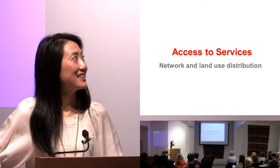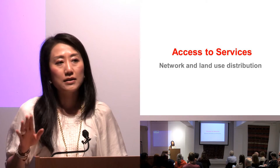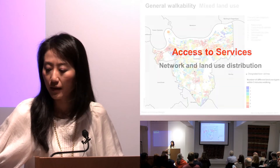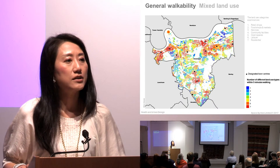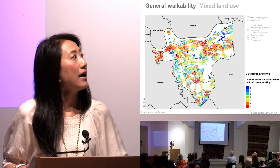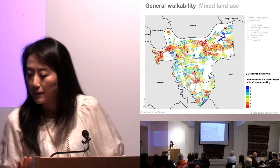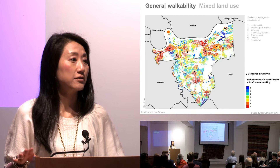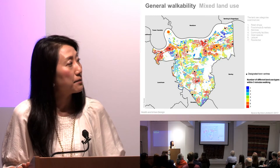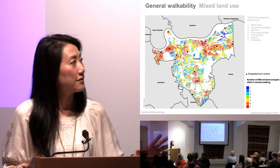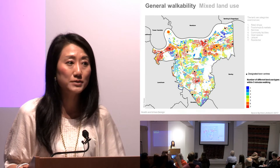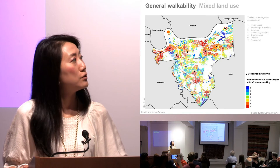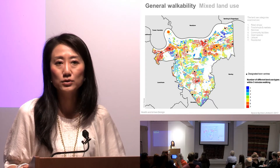The second area is access to services. As well as the network, where things are impacts health in many different ways. This is an example of Greenwich, where we looked at seven different land uses which are of frequent use. The red means you have access to seven different types of land use within five minutes walking distance, and the blue is just one, which is basically mostly residential.